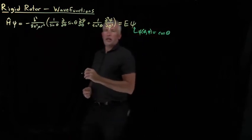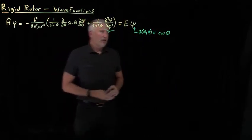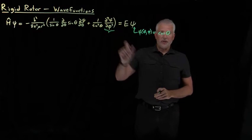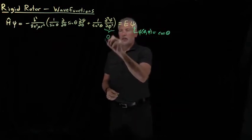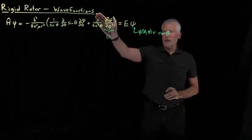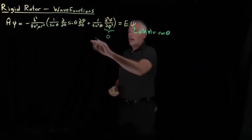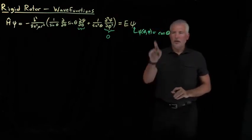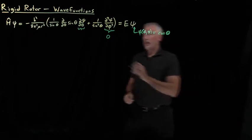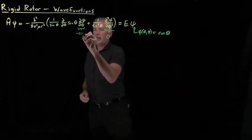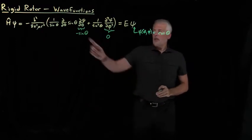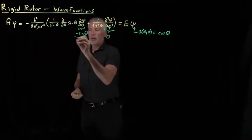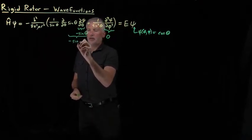Let's do that step by step. The function is simple enough — it only involves theta, it doesn't involve any phis. So the phi derivative, taking the derivative of that function with respect to phi once or twice, gives us zero, so that entire term disappears. The term d ψ/d θ doesn't go away, so I need to take the derivative of cosine theta with respect to theta. That gives me a negative sine theta.